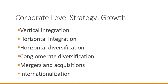Horizontal diversification is getting into a different industry with the same customers we're already serving — so it means a different industry but the same customers. Conglomerate diversification, also known as unrelated diversification, is different: vertical integration, horizontal integration, and horizontal diversification all have a component of relatedness — related to the same industry or the same customers. Conglomerate diversification is unrelated: a new industry and new customers.